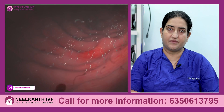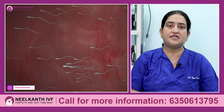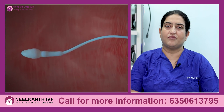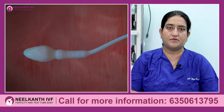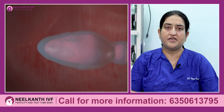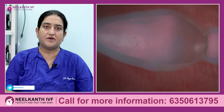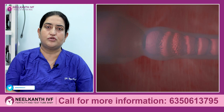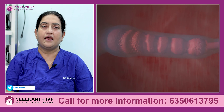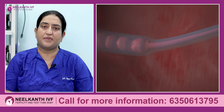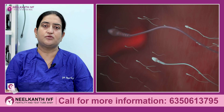When we do a semen analysis, these parameters have to be seen — the motility and the morphology of the sperm, and also how many sperms are dead or alive. If the number of dead sperms in the semen is more, that can also lead to infertility. The last thing to be checked is pus cells, to see whether there is any infection in the semen.